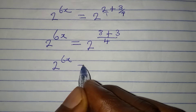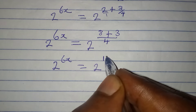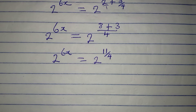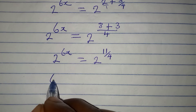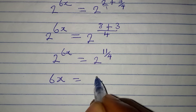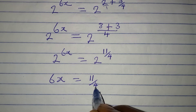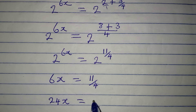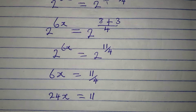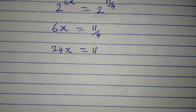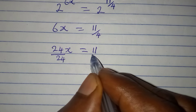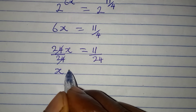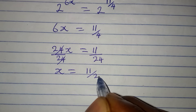Now we have 2 to the power of 6x equal to 2 to the power of 11 over 4. Since we have the same base, we can work with the powers: 6x equals 11 over 4. Cross-multiplying gives 24x equals 11, and dividing both sides by 24, x equals 11 over 24.